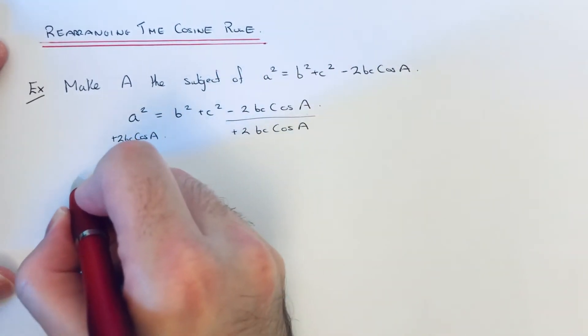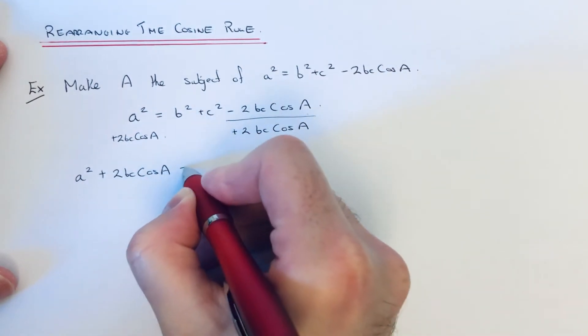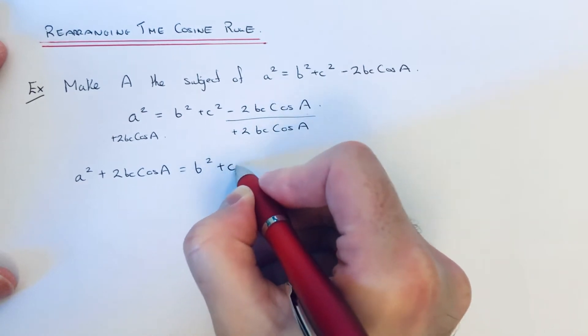So that will give me on the left side a squared plus 2bc cos A equals b squared plus c squared.